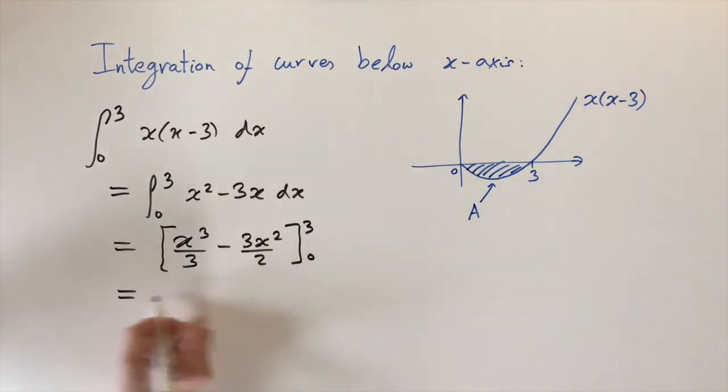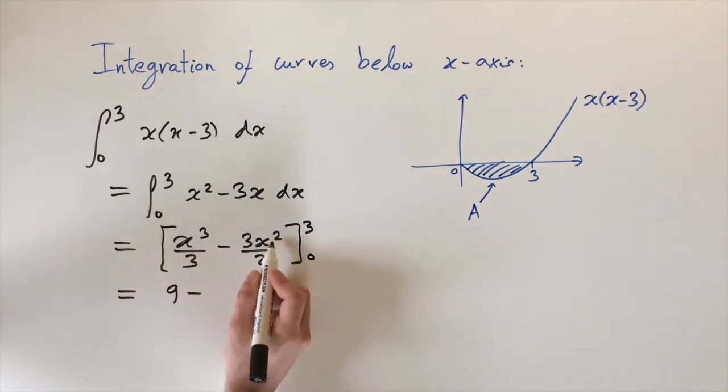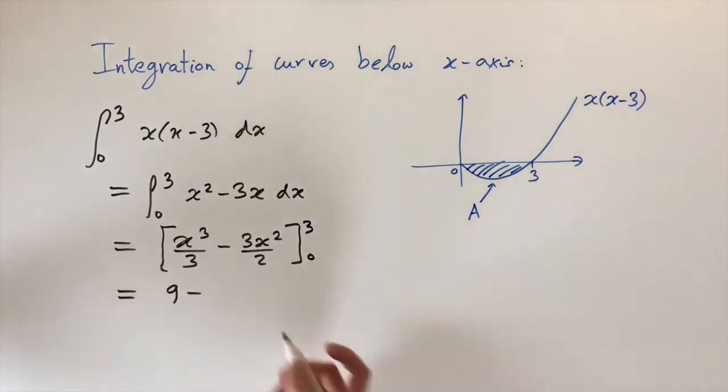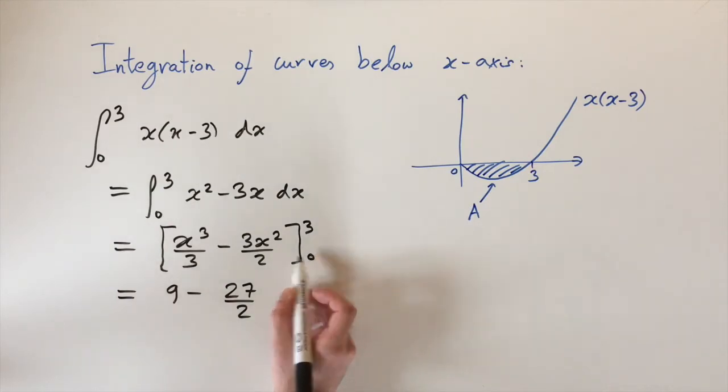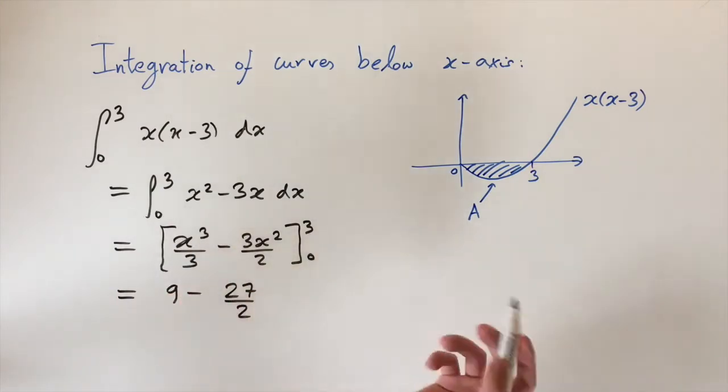So let's do that, let's put these numbers in. We get 3 cubed divided by 3, which is just 3 squared, so that's 9, minus 3 times 3 squared, which is 3 cubed or 27 divided by 2. And then if you put the lower limit 0, because these are just functions of x, this is just going to come out to be 0.